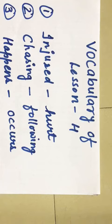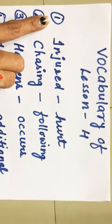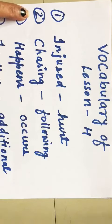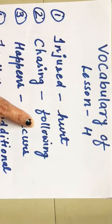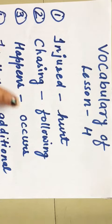Now we are going to learn vocabulary of lesson number 4. So let's start. Number 1: Injured - hurt. Number 2: Chasing - following. Number 3: Happens - occurs.